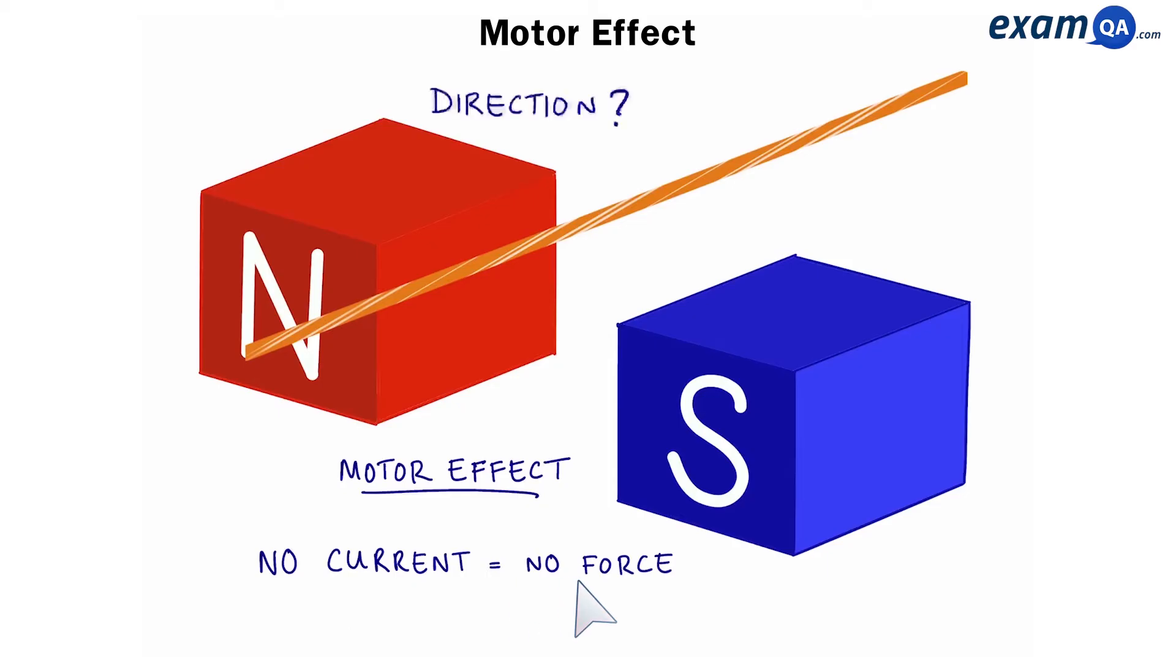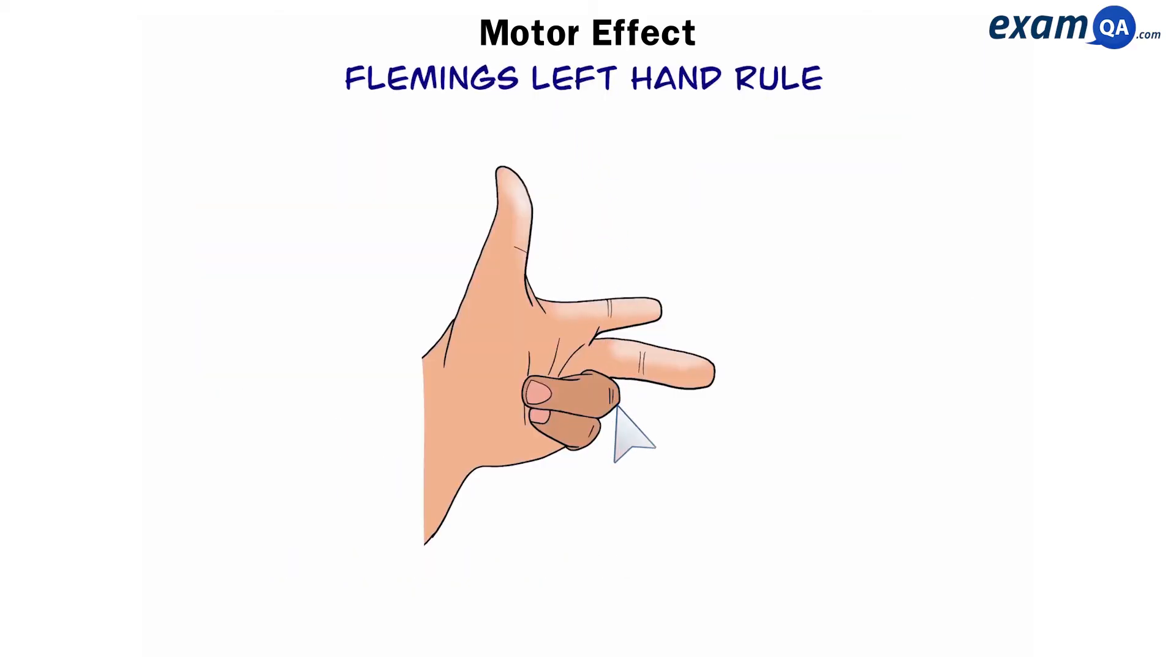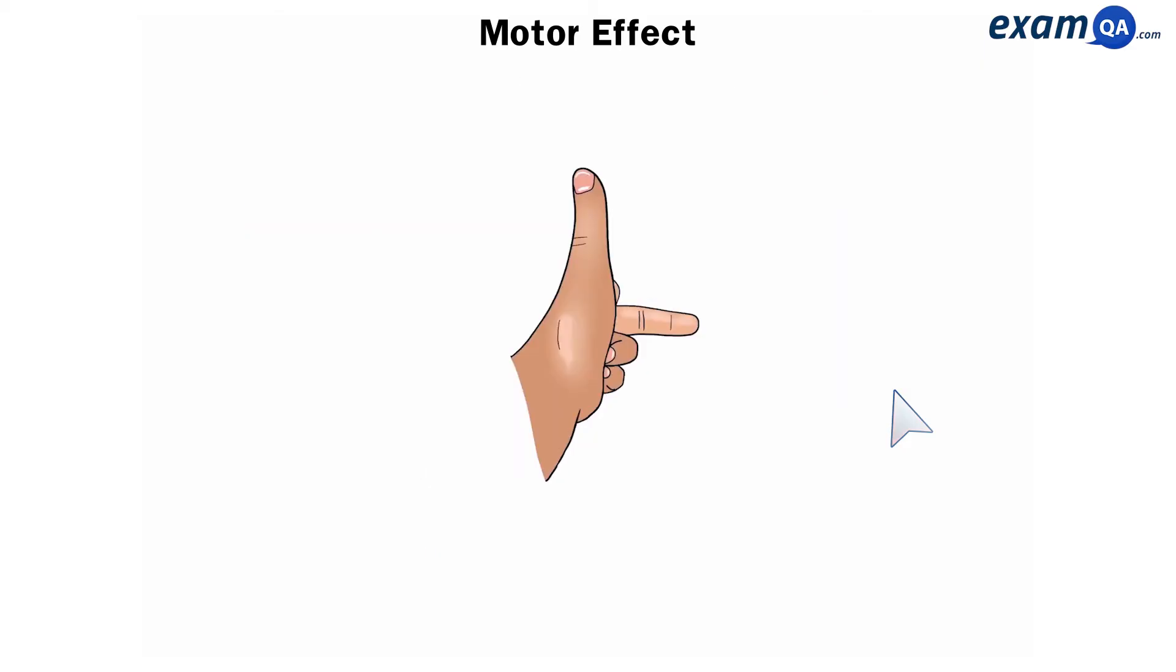What about the direction of the wire? We can work this out using Fleming's left-hand rule. Remember, you have to use your left hand for this rule. The thumb represents the motion. This is going to tell us which way the wire will move. Our first finger will point from north to south, mimicking the magnetic field. And our second finger will point from plus to minus, following the current.